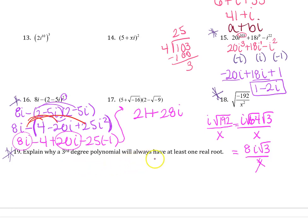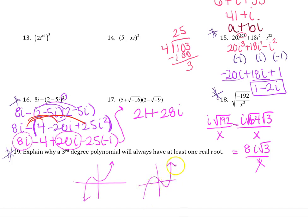Explain why a third-degree polynomial will always have at least one real root. It's because imaginaries come in pairs. The only two scenarios are: you either have all real roots — one, two, three — or you have one real root with two imaginary roots. You couldn't have three imaginary roots because three is not consistent with the word pair. You can have any even number of imaginary roots, but never an odd number.